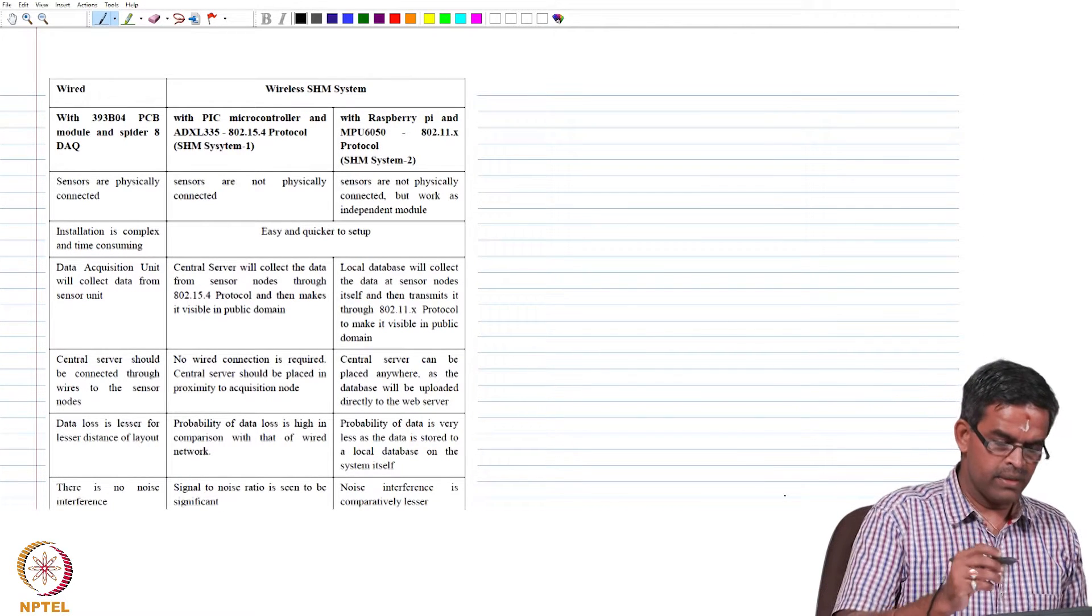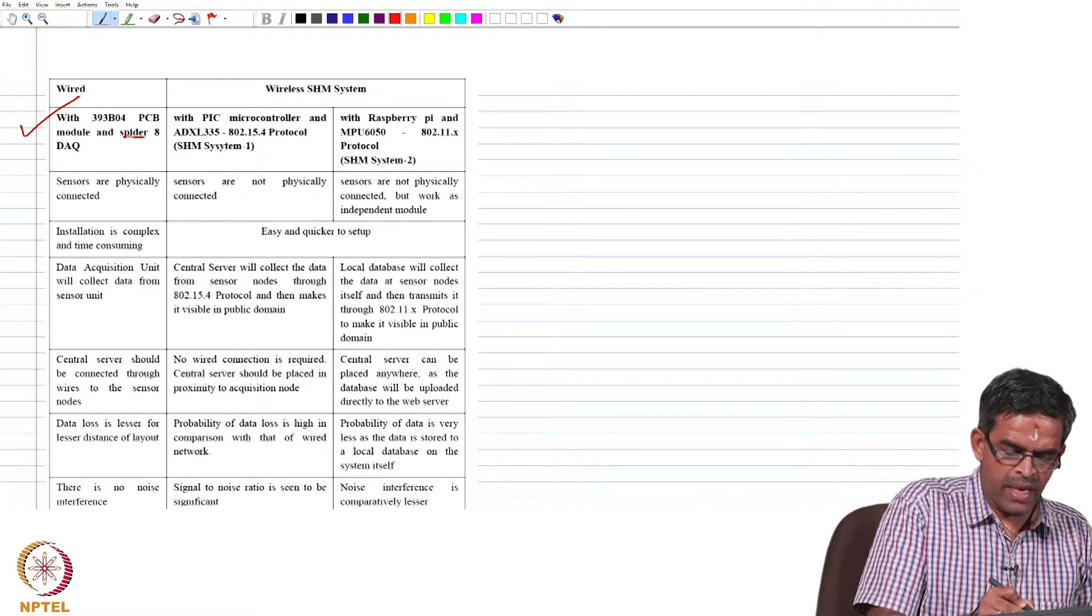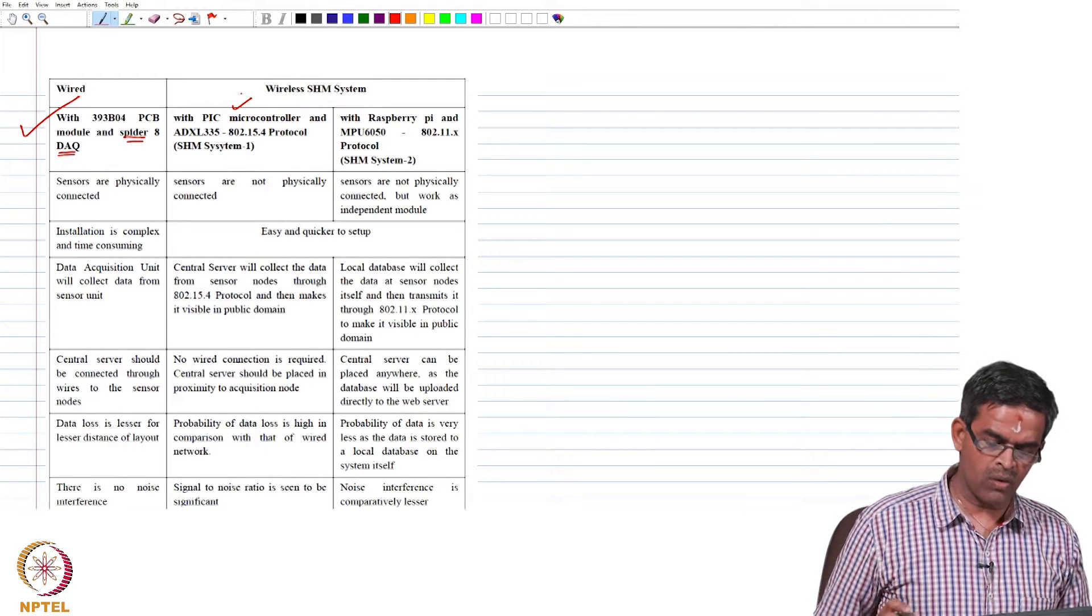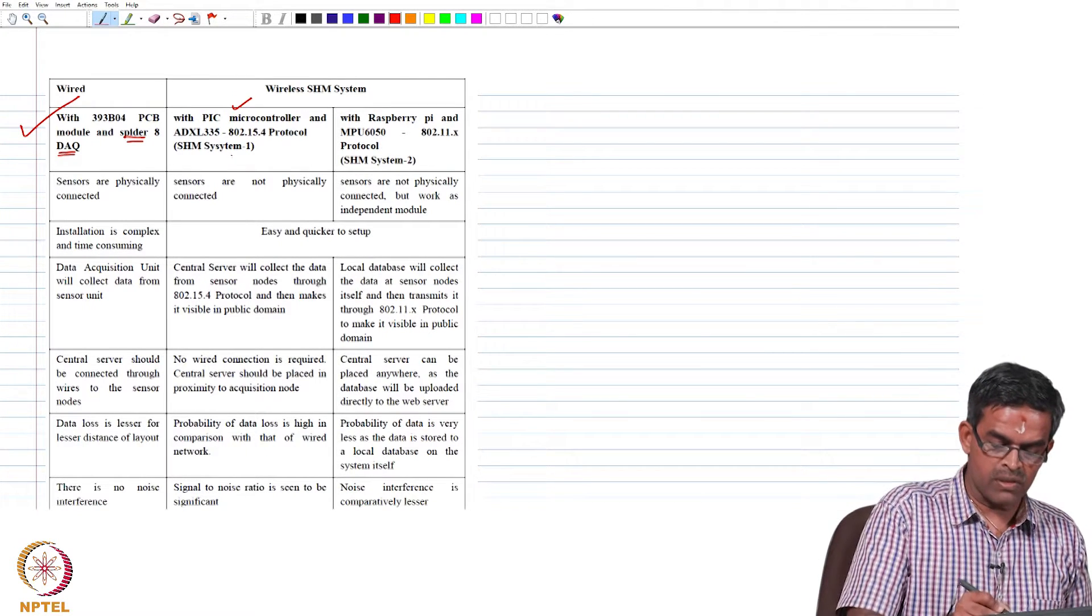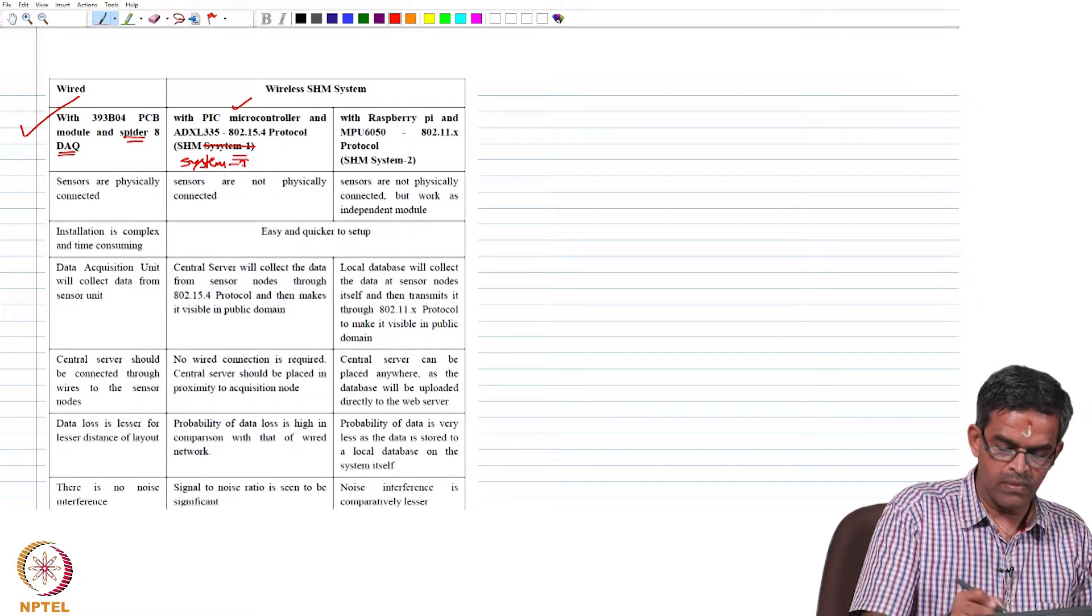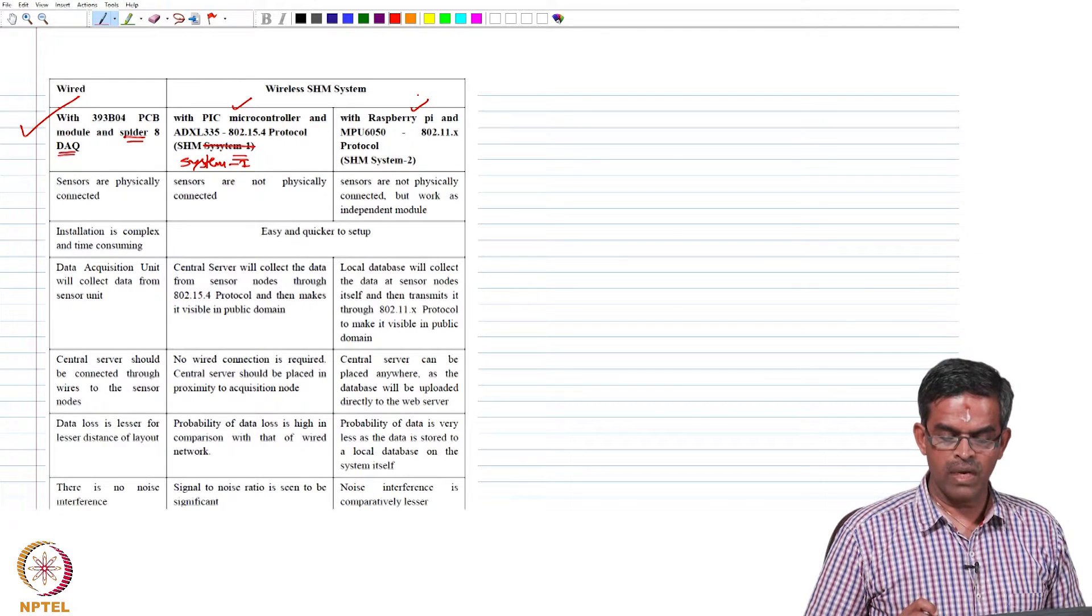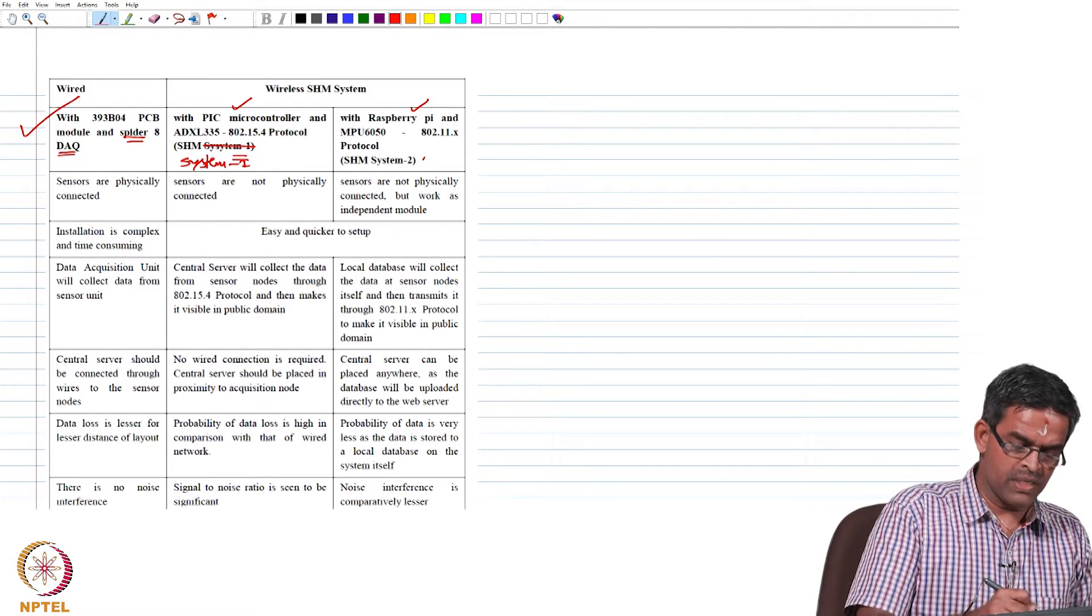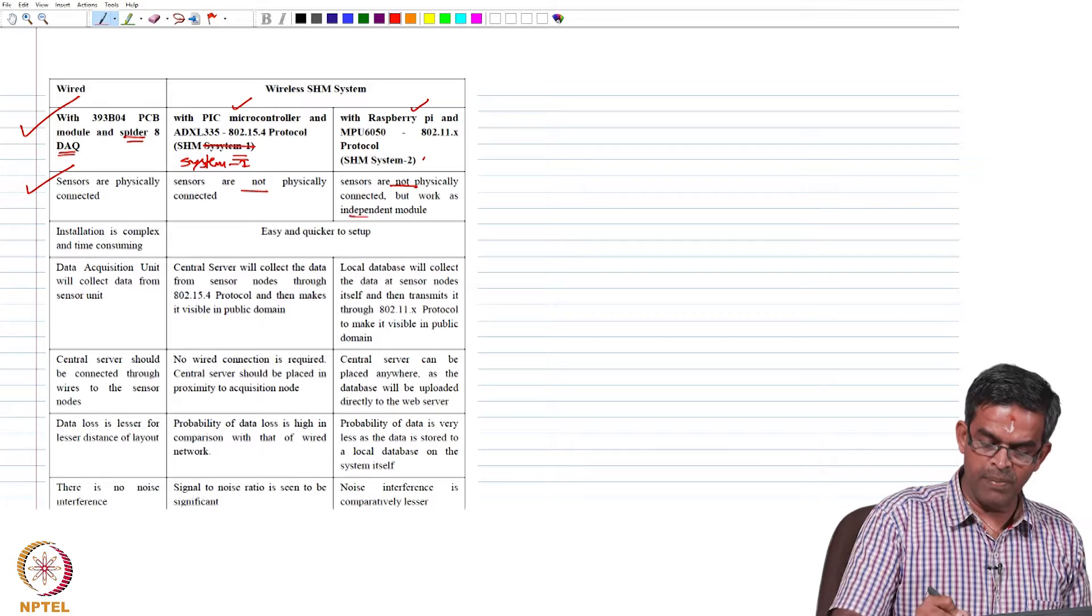Wired sensors had 393P04 PCB module and SPDR8 data acquisition system, whereas wireless system had PIC microcontroller and ADXL335, 802.15.4 protocol for system 1. System 2 had raspberry PI board with MPU 6050, 802.11X protocol. Sensors are physically connected in the wired case, whereas in wireless they work as independent modules.